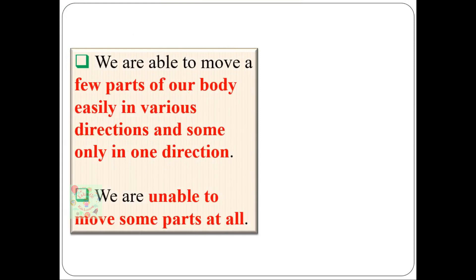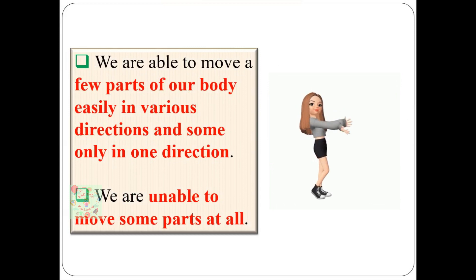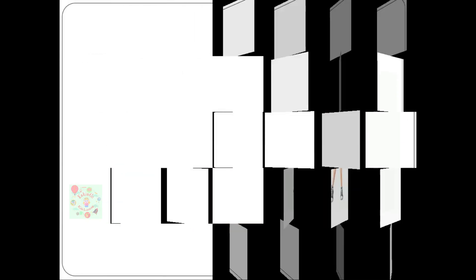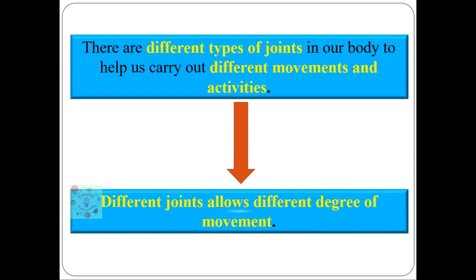You might have observed that we can move some parts of our body easily in various directions, some only in one direction, and some we are unable to move at all. The reason is that there are different types of joints in our body, and different joints allow different degrees of movement. The type and degree of movement depend upon the type of joint present at a particular place.